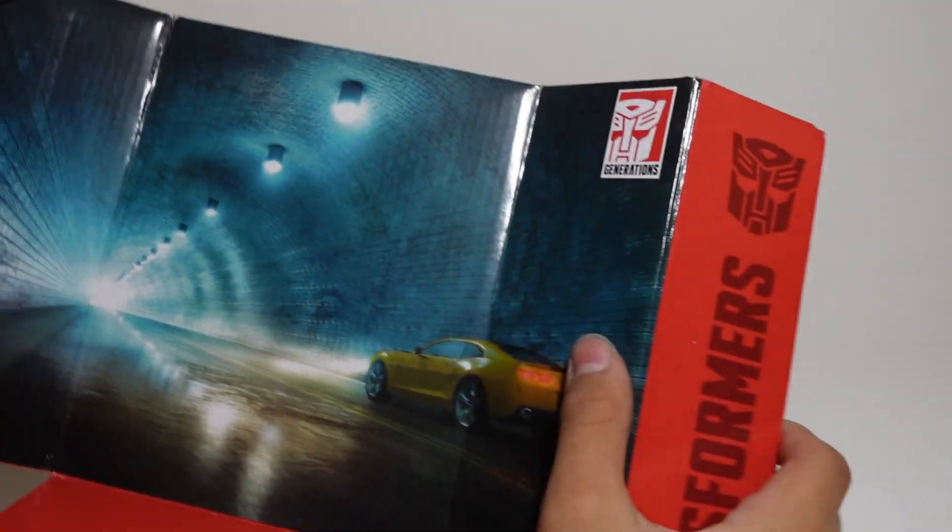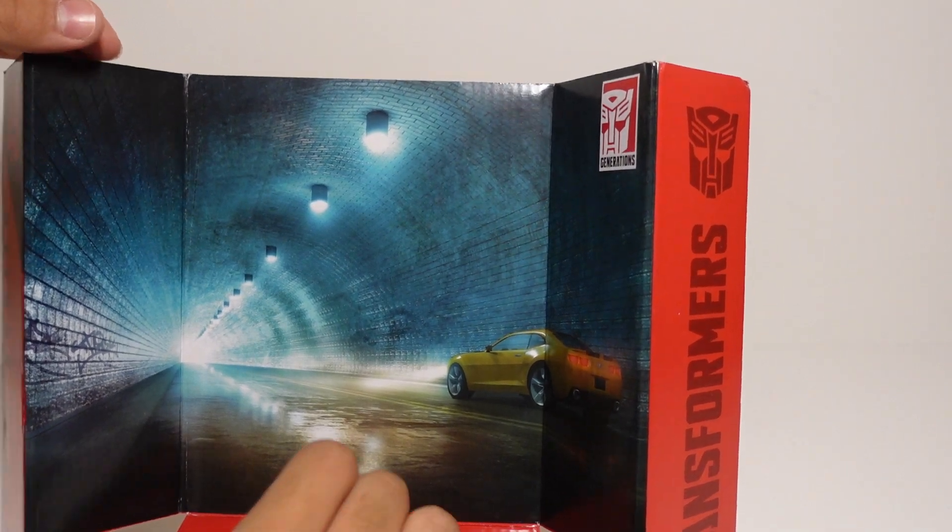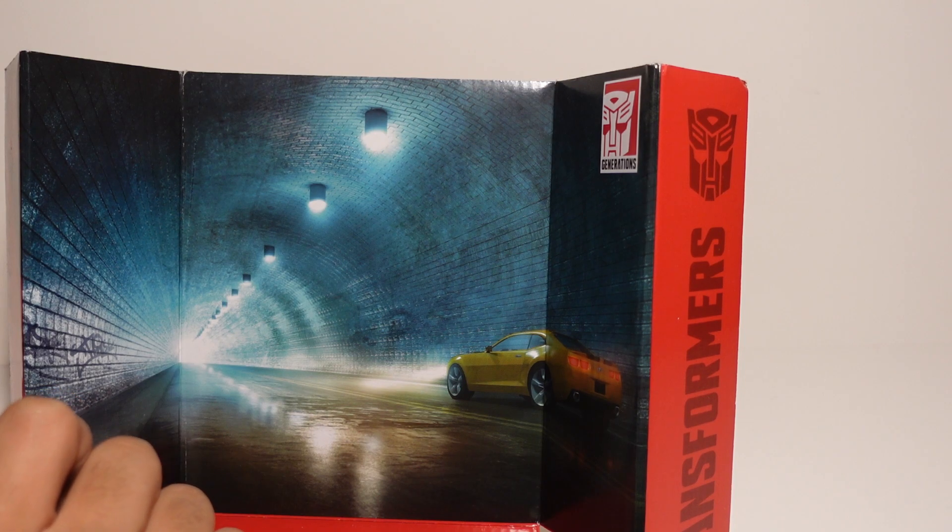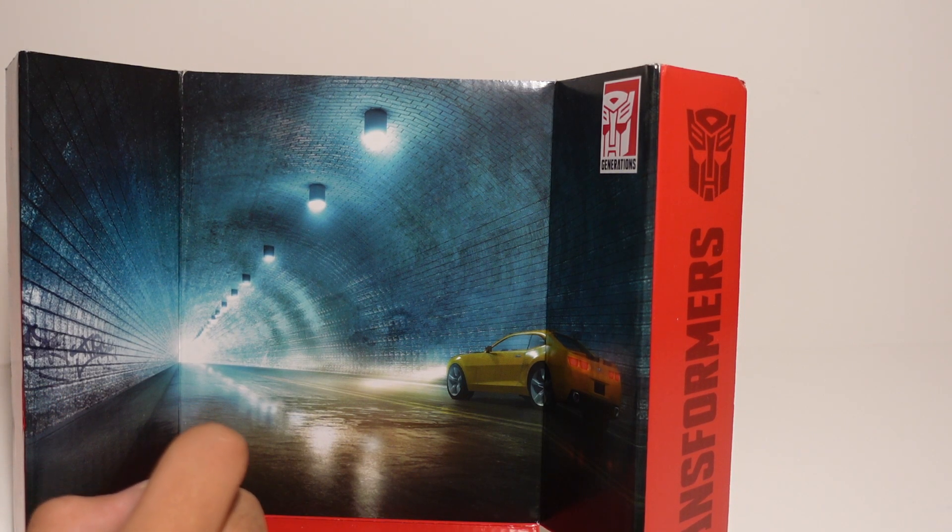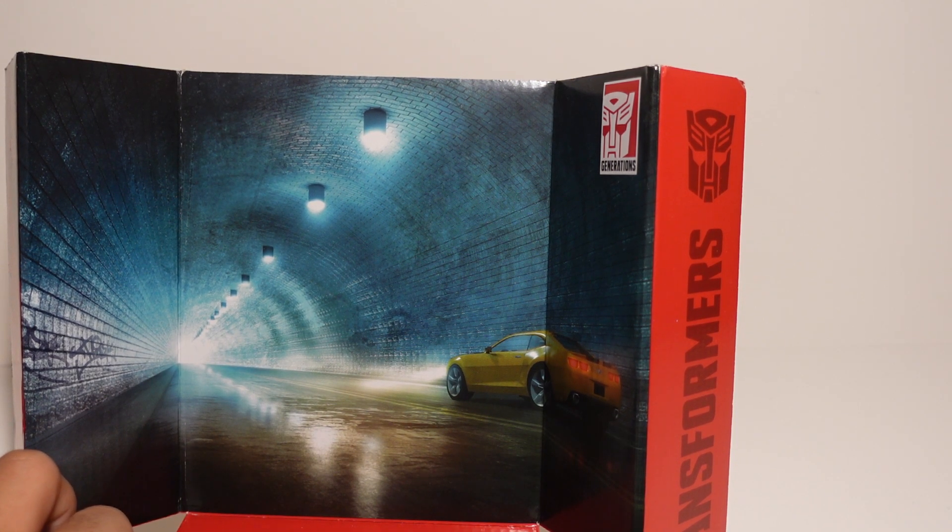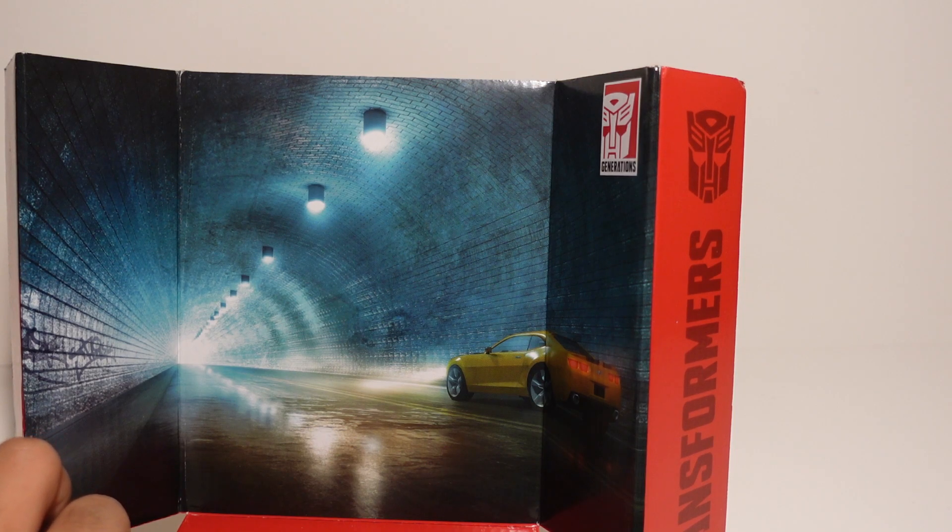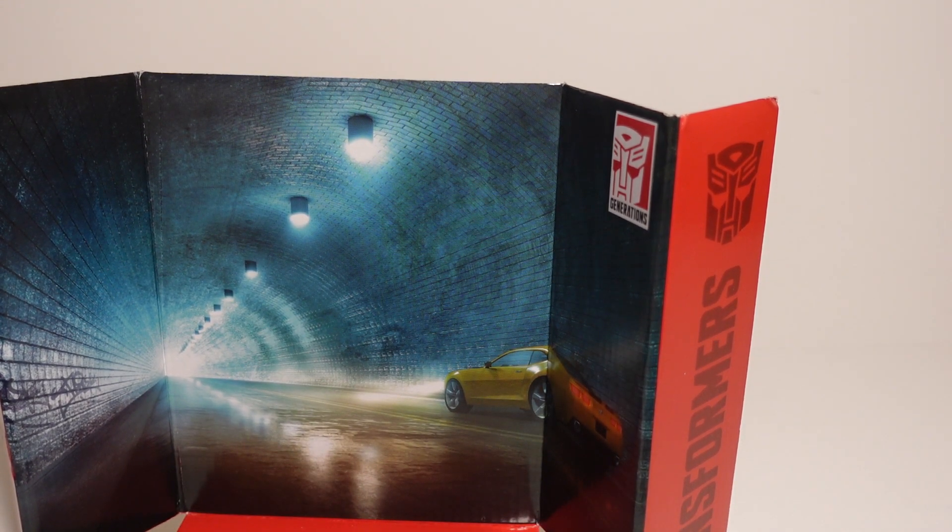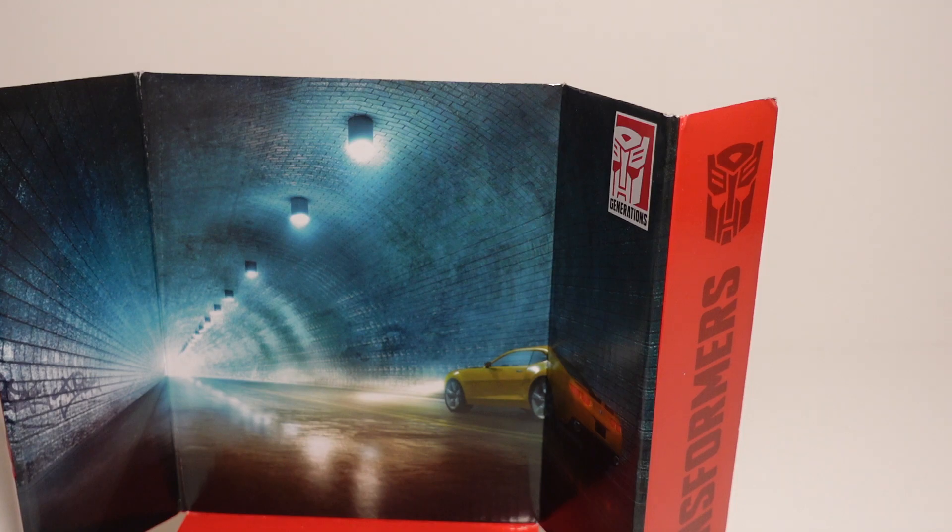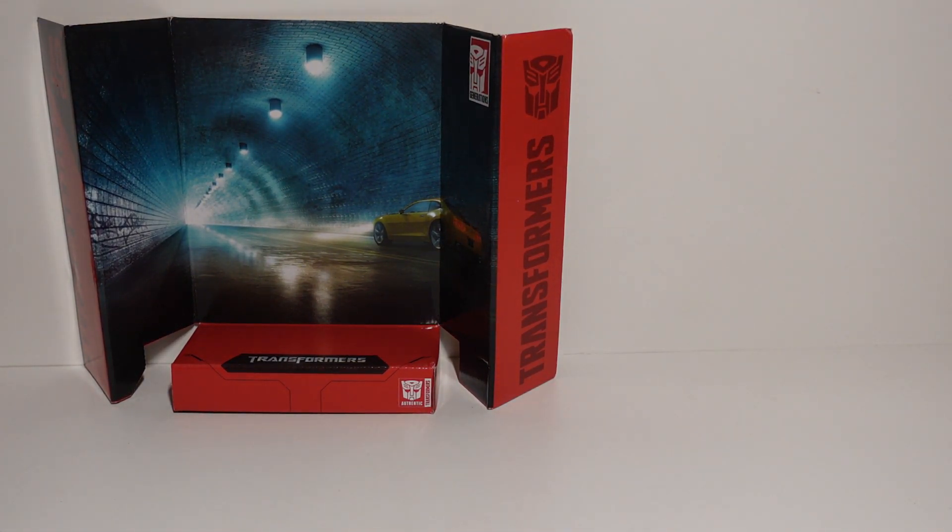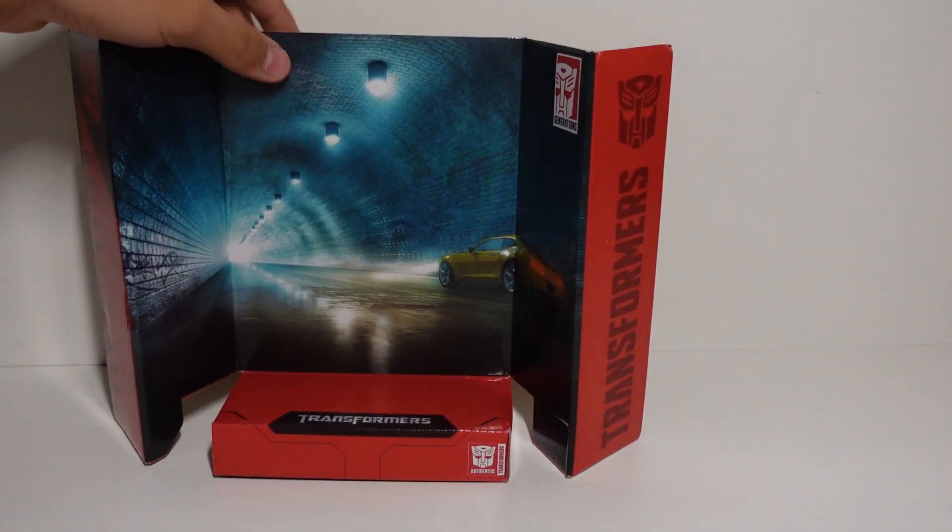Now, in this part of the film, Bumblebee trades his 19-something Camaro version to his 2007 Camaro, which I like both. But it was pretty cool how he did it. He just slanted the car, like he made himself go kind of sideways, so that he could scan the new Camaro version, and then that's how he became his new Camaro. Now, if you have Studio Series number 01, or number 20, 27, you can recreate this iconic movie moment in the movie.